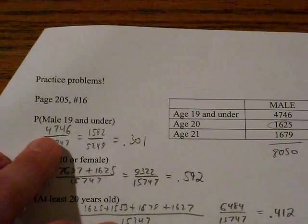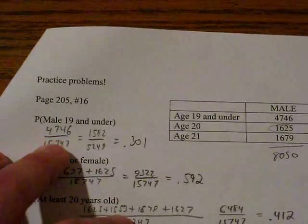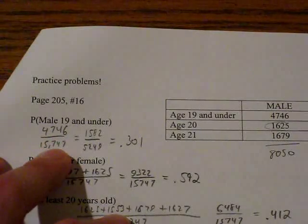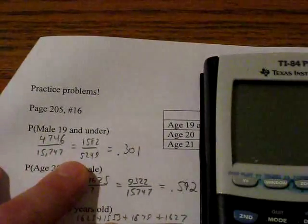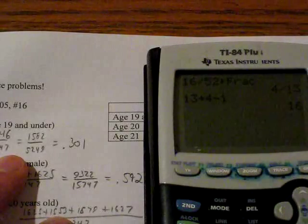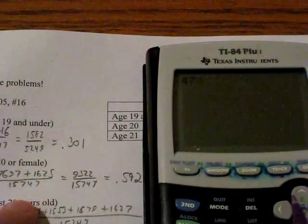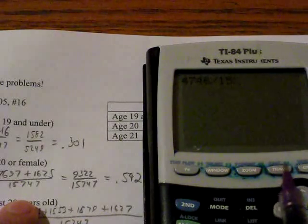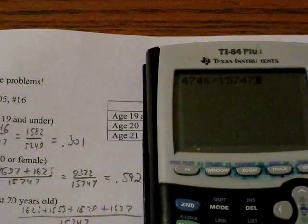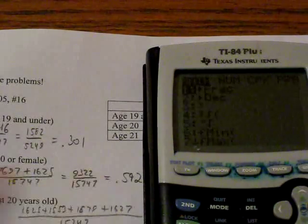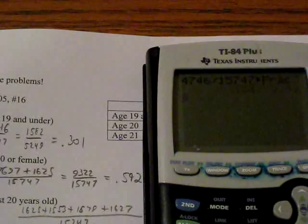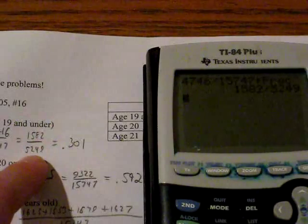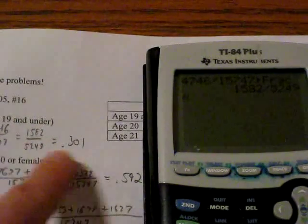Okay, so what's the probability of men who are 19 and under? Well that's easy to see, it's 4,746 over 15,747. Now again, it's really nice to use your calculator to do some big time reducing of fractions. So if you type in 4,746 divided by 15,747, on the TI-83 and 84 calculator you can press the math key and hit the enter key and it will reduce that fraction if possible. And it reduces it down to 1,582 over 5,249 or about 30% or 0.301.